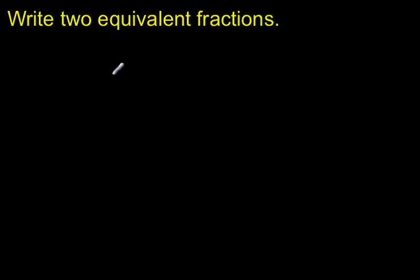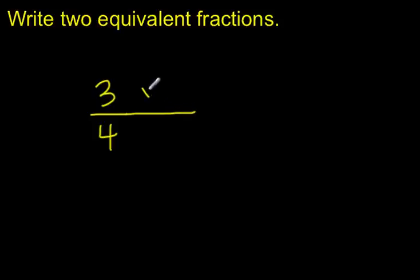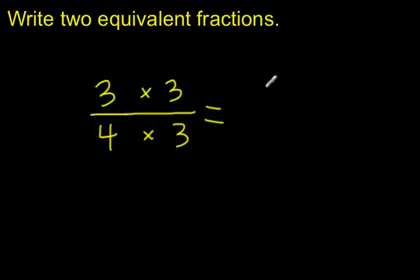Another way you might do this is to start with whatever fraction you're going to write. Let's say the fraction is 3 fourths. Again, I can use a multiplication relationship to get an equivalent fraction. Maybe I'll multiply my numerator by 3 and my denominator by 3. As long as I use the same multiplication relationship for both, I'll get an equivalent fraction. In this case, 3 times 3 is 9, and 4 times 3 is 12. So 3 fourths is equivalent to 9 twelfths.